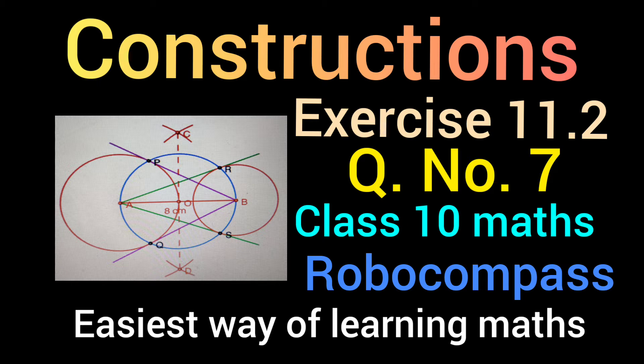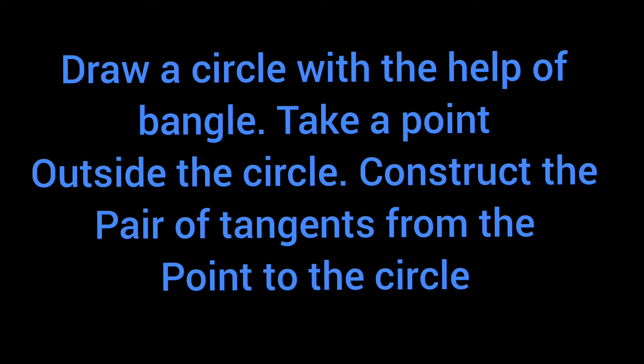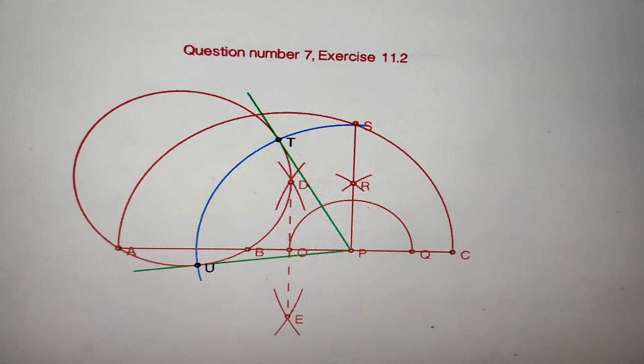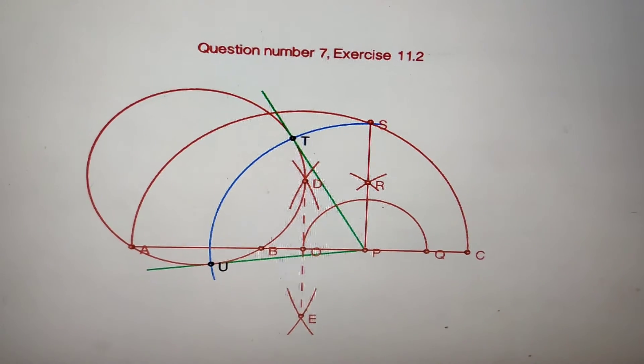Question number 7 of exercise 11.2. The question is: draw a circle with the help of a bangle, take a point outside the circle, and construct the pair of tangents from this point to the circle. How to construct it?